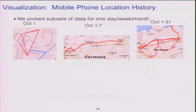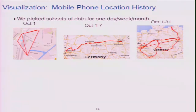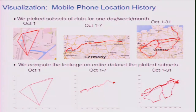Next, looking at the mobile phone location history, we did exactly the same attack. There are many more points in this dataset, so we picked out subsets — a day, a week, a month — and looked at the leakage on the entire dataset from the point of view of an attacker with ideal leakage. I've just recovered pictures that look like the actual movement of somebody through ideal leakage alone, without using any side information like knowing this was a German mobile phone user or where he lived.